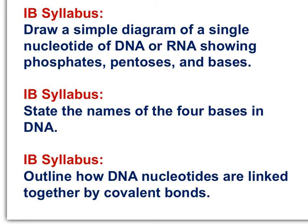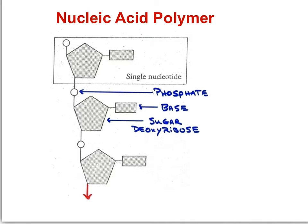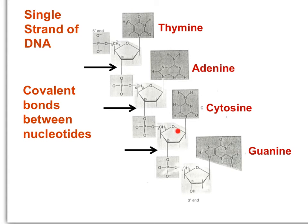Here are the IB syllabus statements taking us from nucleotide monomer to the polymer DNA: draw a simple diagram of a single nucleotide of DNA or RNA showing phosphates, pentoses, and bases; state the names of the four bases in DNA; and outline how DNA nucleotides are linked together by covalent bonds. In this diagram, you can see a single nucleotide covalently bonded to a second and a third nucleotide. This displays a short section of a single strand of DNA.